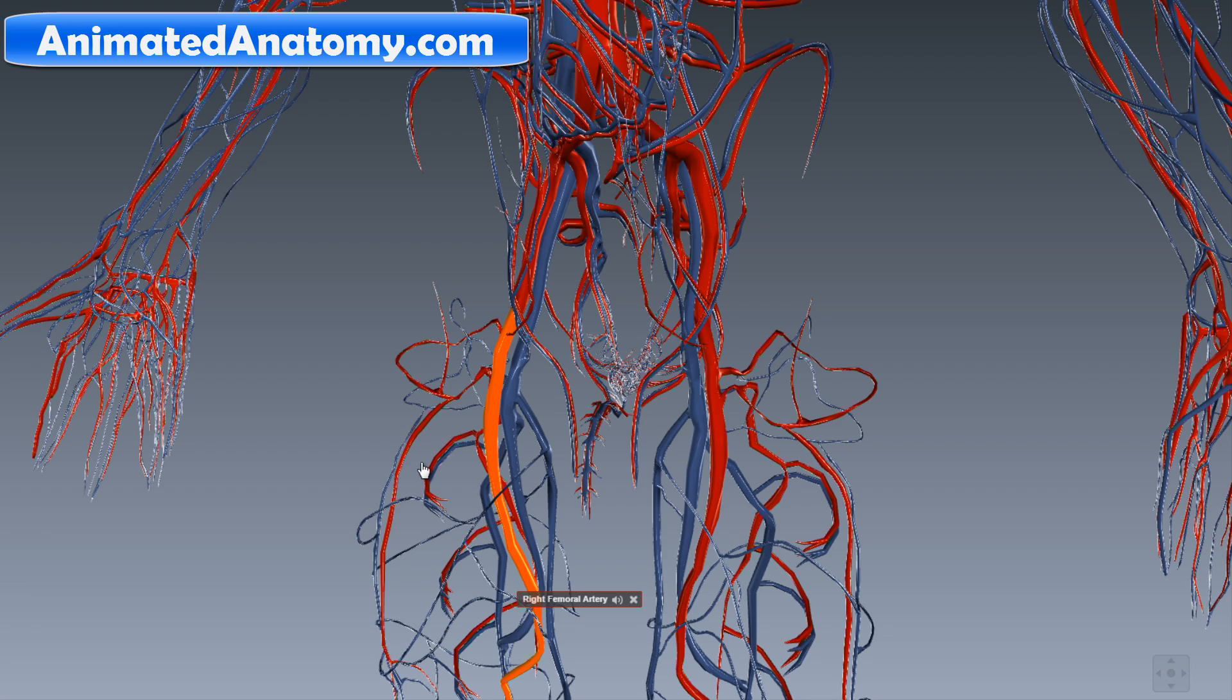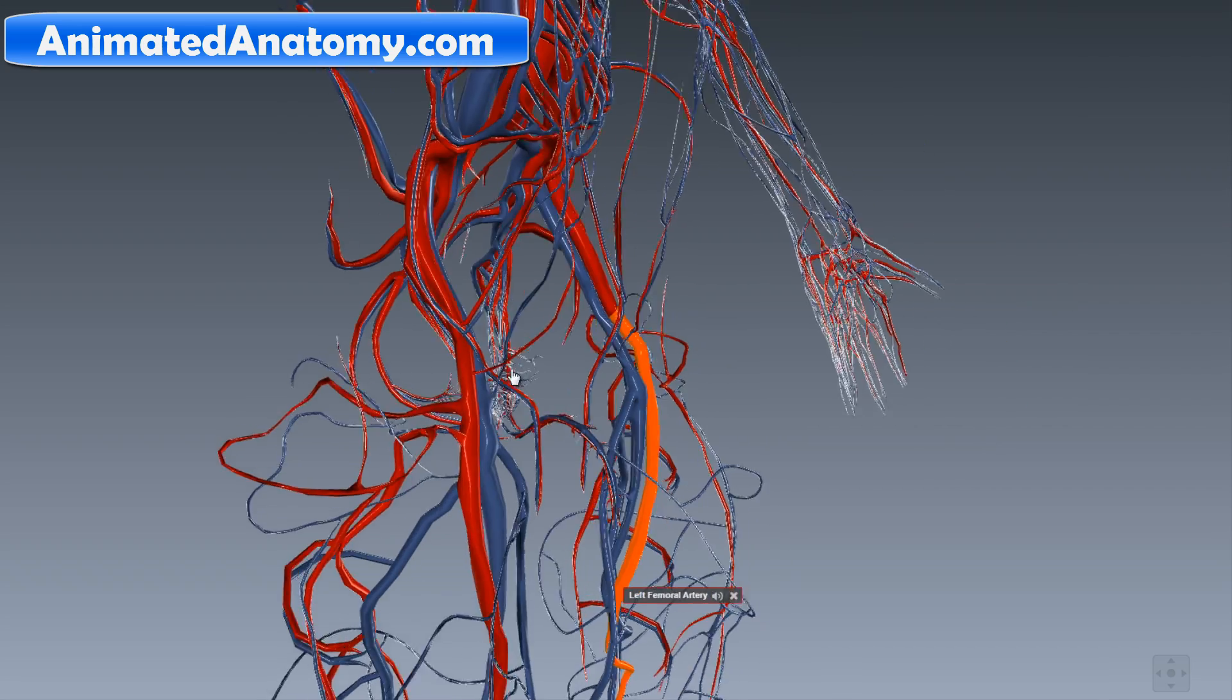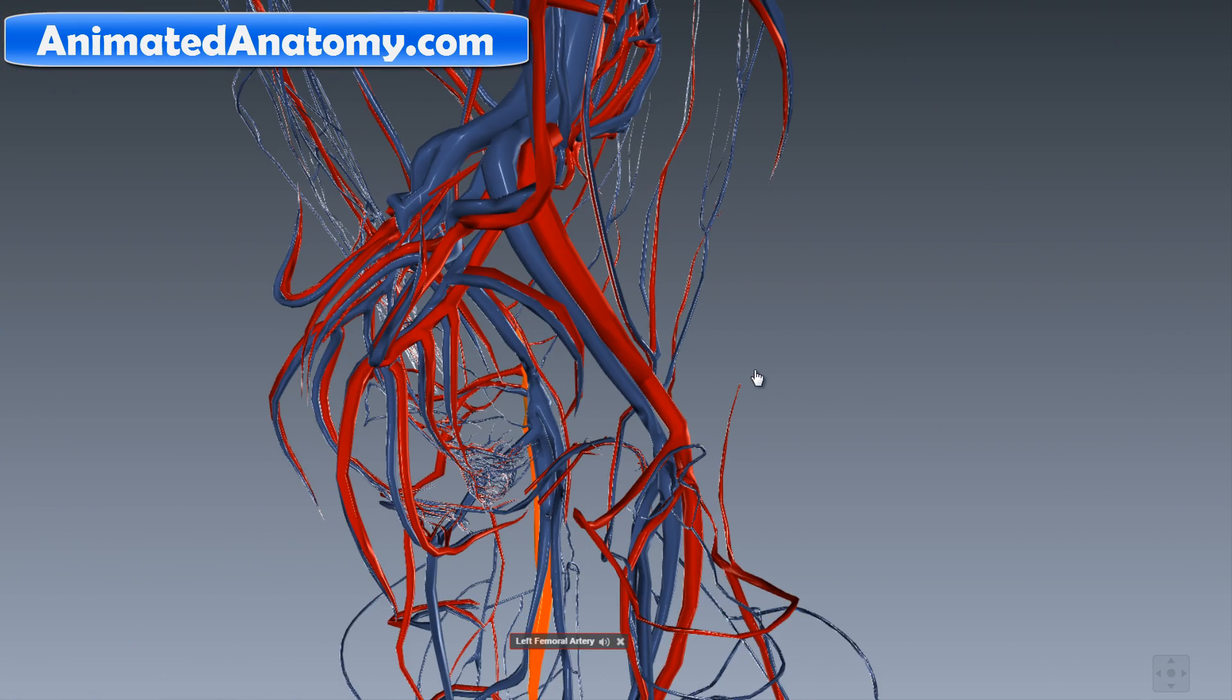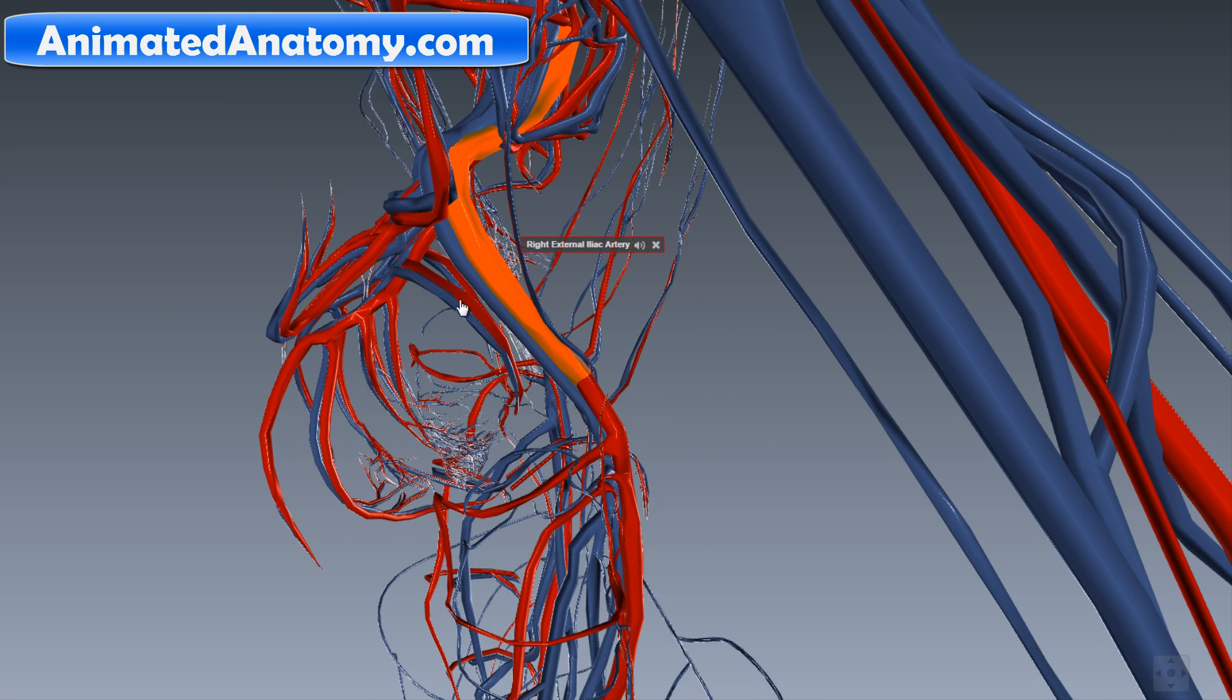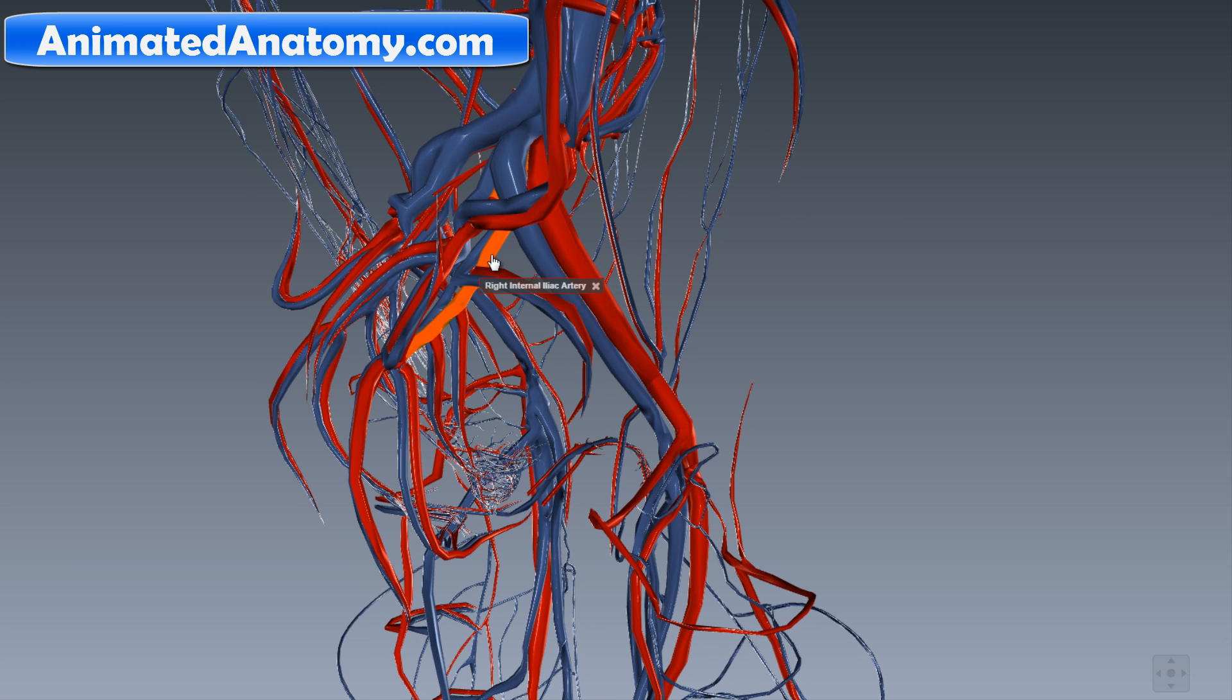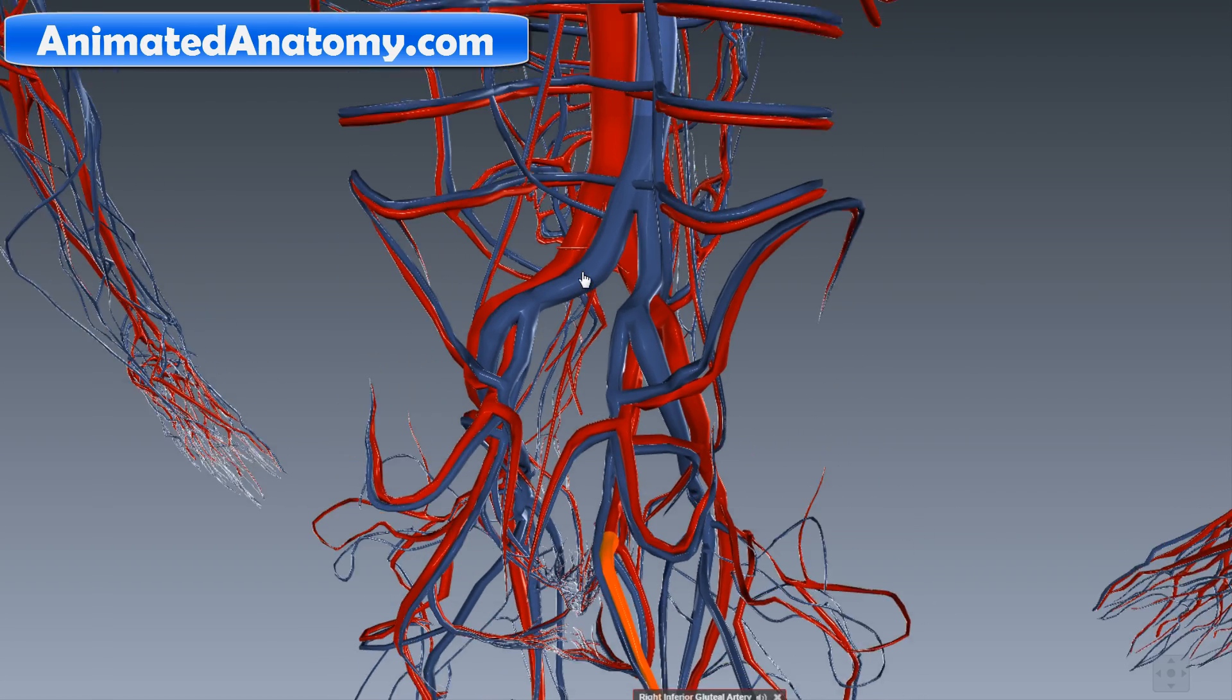At a certain point, you have here the right internal iliac artery. Remember, this was the right external iliac artery. And this, of course, is the internal because it goes internally. And here, it releases the pudendal artery that goes to the penis. And here, we have the gluteal artery that goes to the gluteus muscles, the minimus, maximus, and the medius.